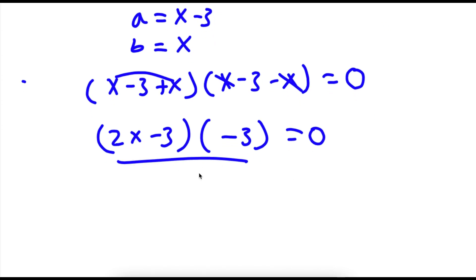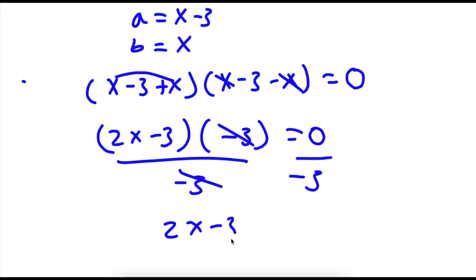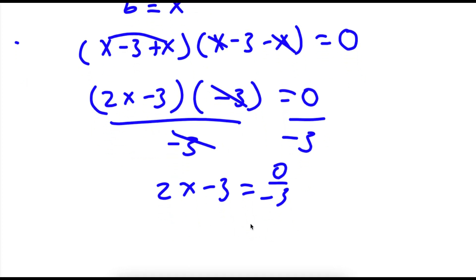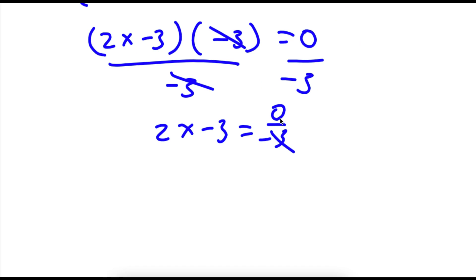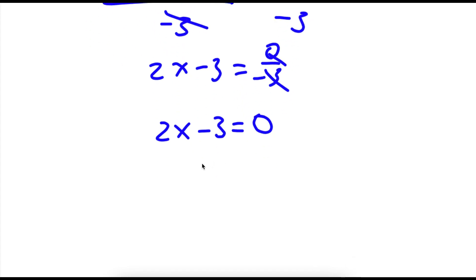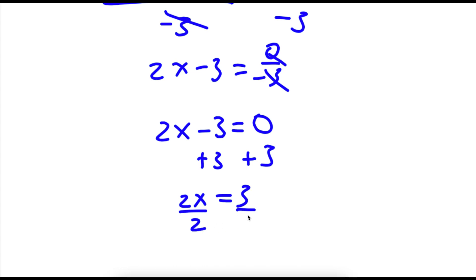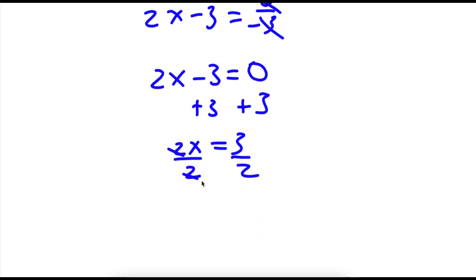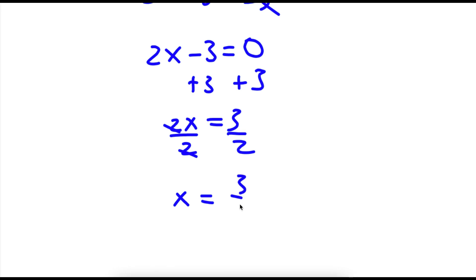Now if I divide both sides by negative 3, these two cancel out and I have 2x minus 3 is equal to 0 over negative 3. Now 0 divided by any number is 0, so I'm left with 2x minus 3 is equal to 0. Adding 3 on both sides gives 2x is equal to 3. Dividing by 2 on both sides, these cancel out and I'm left with x is equal to 3 over 2.